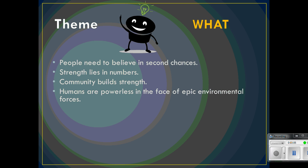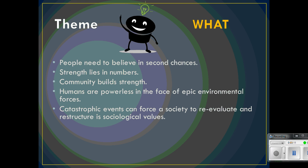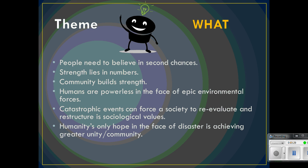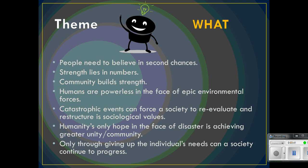Here's one that's even more specific: catastrophic events can force a society to re-evaluate and restructure its sociological values. Humanity's only hope in the face of disaster is achieving greater unity or that sense of community — that's certainly one of the big ideas that Goggins pulled out of The Grapes of Wrath. And here's one more: only through giving up the individual's needs can a society continue to progress. Many of these themes are related to each other, just different ways of saying the same thing.